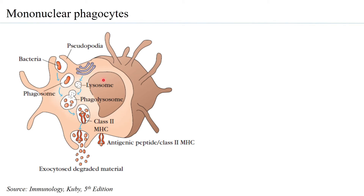This diagram shows how phagocytosis happens. You can see how the pseudopodia extend to engulf a bacterium, which is then present within a vesicle called a phagosome. In the meantime, lysosomes are maturing from the endomembrane network system.